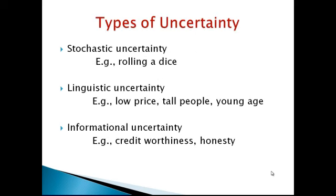In day-to-day life, we involve three types of uncertainty. The first is stochastic uncertainty — for example, rolling a dice. Linguistic uncertainty includes concepts like low price, tall people, and young age. Informational uncertainty includes concepts like credit worthiness and honesty.